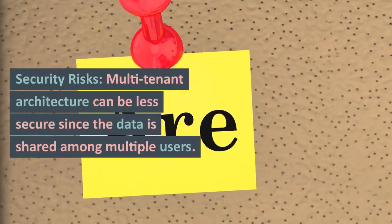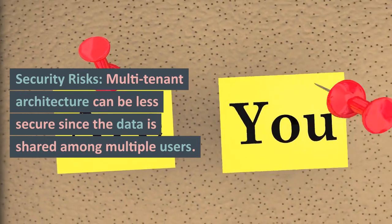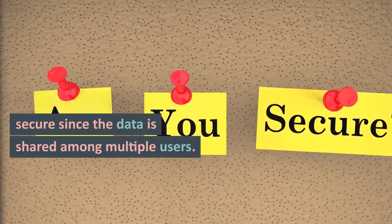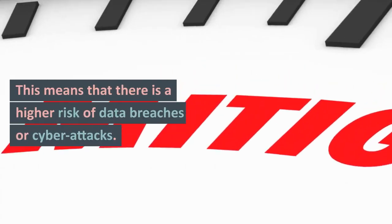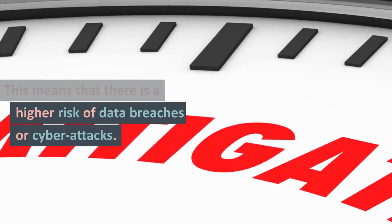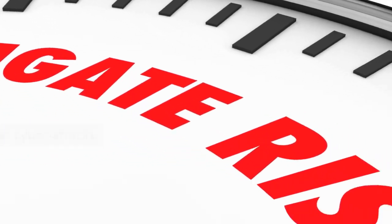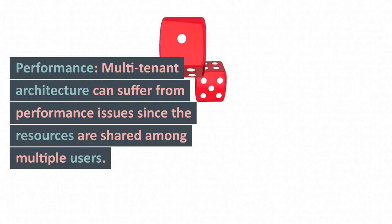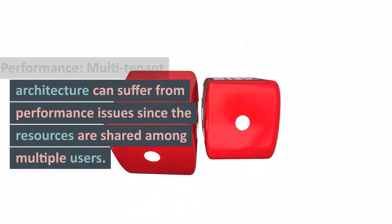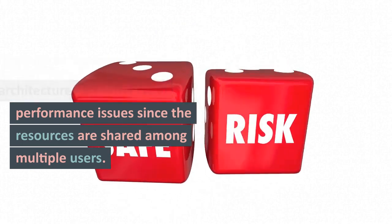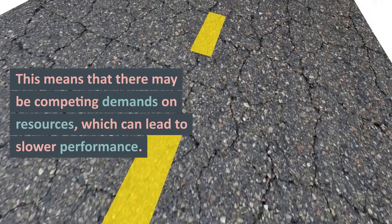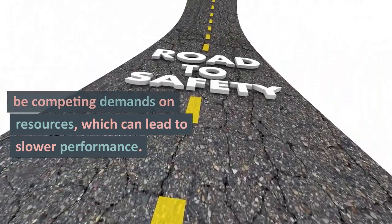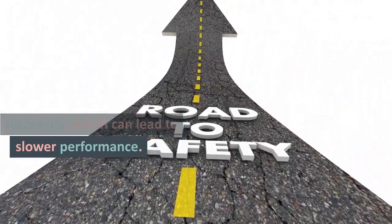Security risks: multi-tenant architecture can be less secure since the data is shared among multiple users. This means that there is a higher risk of data breaches or cyberattacks. Performance: multi-tenant architecture can suffer from performance issues since the resources are shared among multiple users. This means that there may be competing demands on resources, which can lead to slower performance.